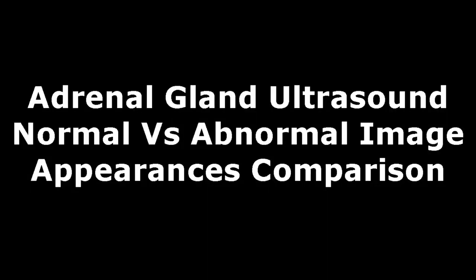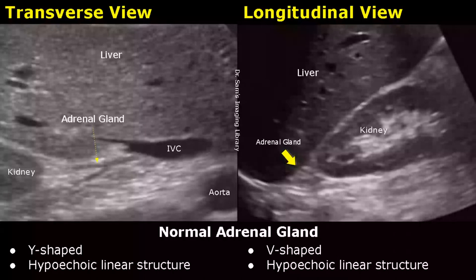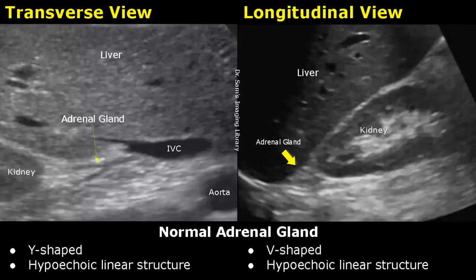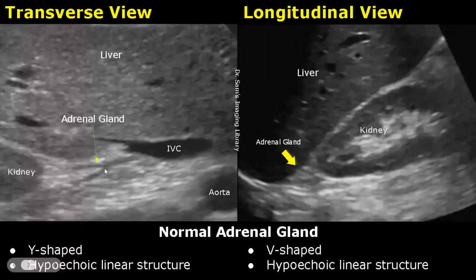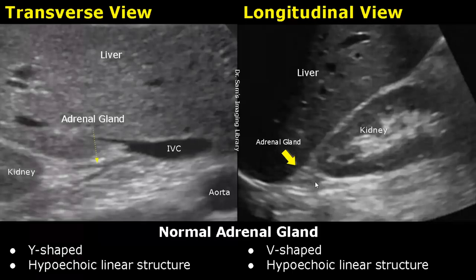Hello everyone, this is Dr. Sam and this video is about adrenal gland ultrasound. In adults, adrenal glands are difficult to see on ultrasound, especially the left adrenal gland. So usually the right adrenal gland is seen. In newborns an adrenal gland is much easier to locate. In the transverse view it is seen as a Y-shaped linear hypoechoic structure, and in the longitudinal view it is seen above the upper pole of the kidney as a V-shaped hypoechoic linear structure.